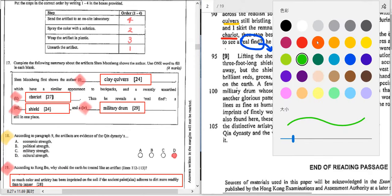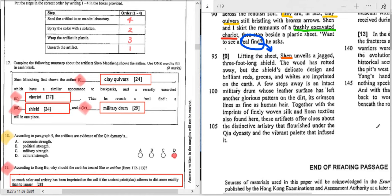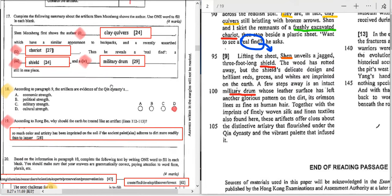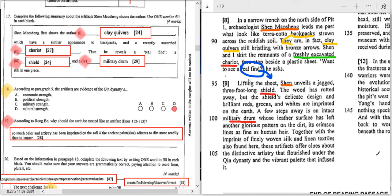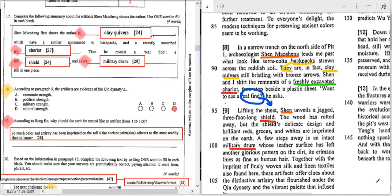Anyway, we're still looking for the third and the fourth item. The real find. A what and a what still in one piece. So what you need to do is try to locate two more items. Lifting a sheet, he unveils a jagged three foot long shield. The wood has rotted away but the shield design and brilliant rares. And a few steps away is an intact military drum. So the last two items are there. And you have one word, shield, and you have two words, military drum for the last blank.